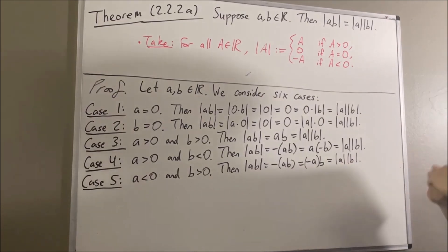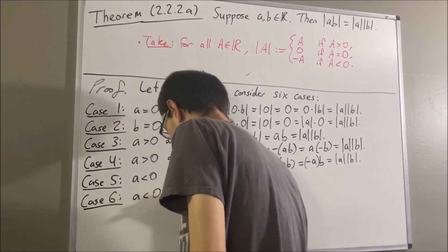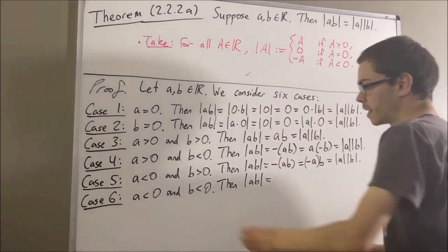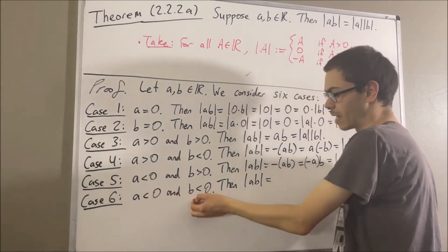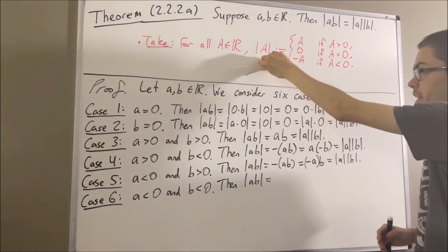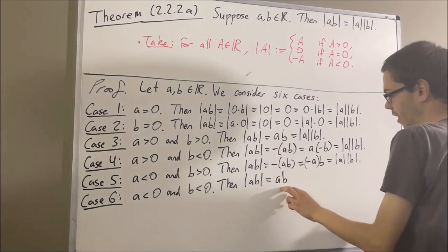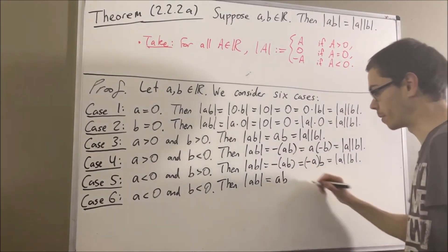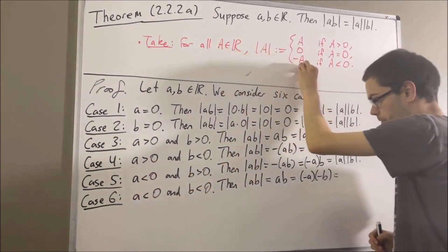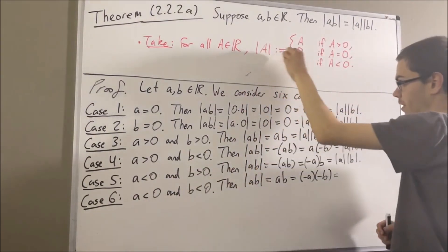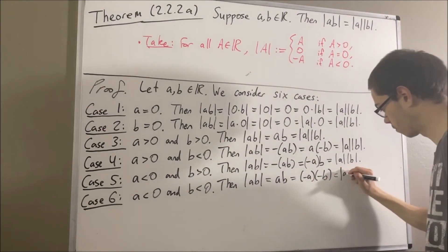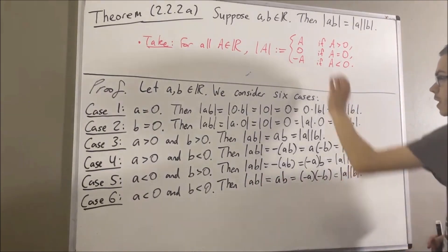Let's go to our final case, where A is less than zero and B is less than zero. Again, we're going to establish a chain of equalities showing that these two are equal. Since A is less than zero and B is less than zero, this implies A times B is greater than zero. So applying the definition of absolute value, the absolute value of A times B is equal to A times B. But A times B is the same thing as the negative of A times the negative of B. By definition of absolute value, since A is less than zero the absolute value of A is equal to the negative of A, and since B is less than zero the absolute value of B is equal to the negative of B. So we can replace the negative A with absolute value of A and replace the negative B with absolute value of B.